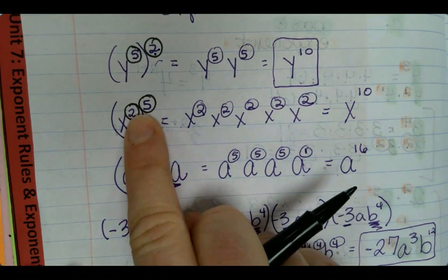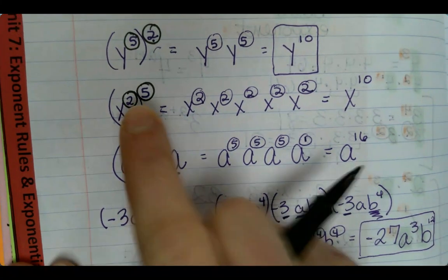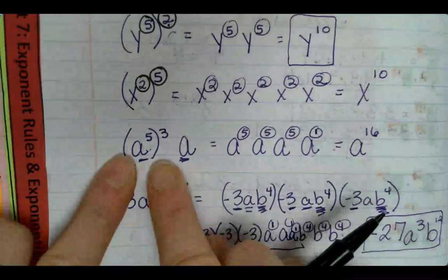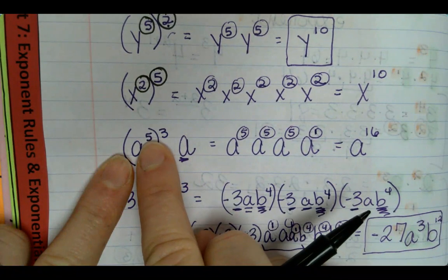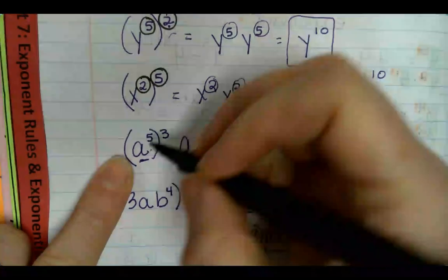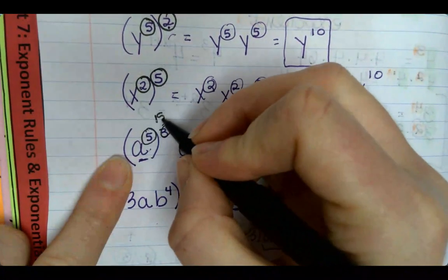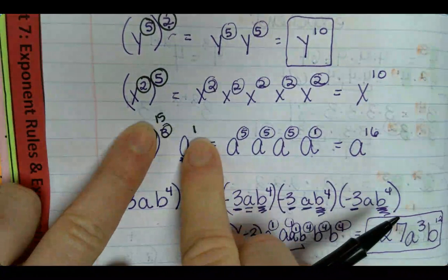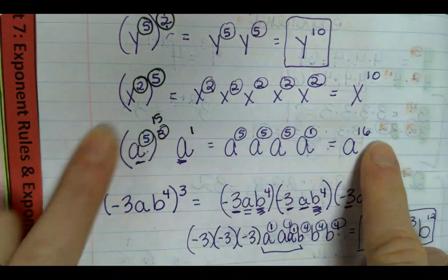Multiplying. What about over here? Same thing. What about this one? But what if I ignore that? What would this be? Fifteen and then add the one, making it sixteen.